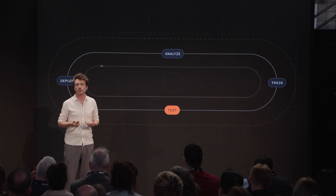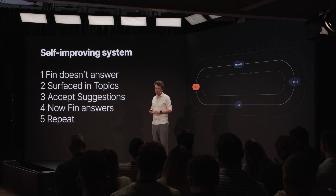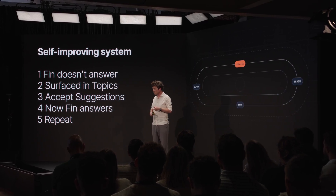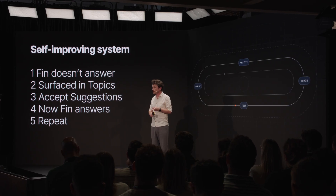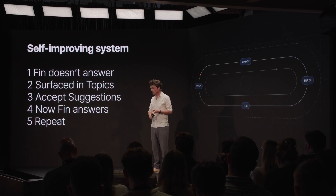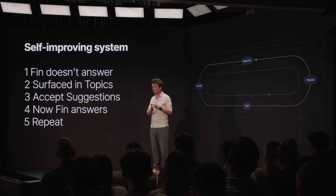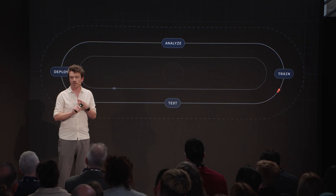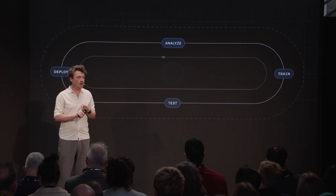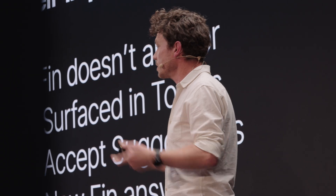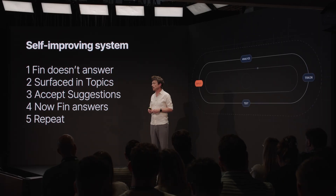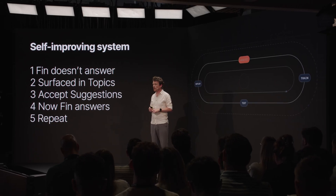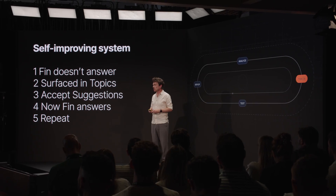In totality, what this means is we have built — and you will have — a self-improving system. Imagine Finn can't answer a question. Finn today does 56% resolution out of the box; our customers average around 60–80%, with some in the 80s. When Finn can't answer, we're going to surface that in Topics, give you suggestions, you one-click accept, and now Finn can answer. You go into another topic, then another, and over time — days and weeks — you will dramatically improve your CX score, resolution rate, and overall customer experience.